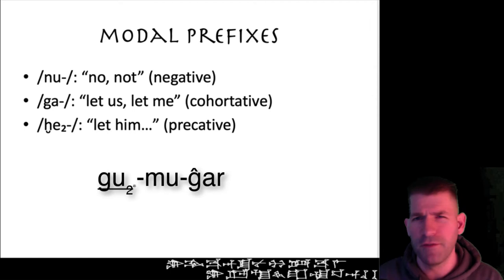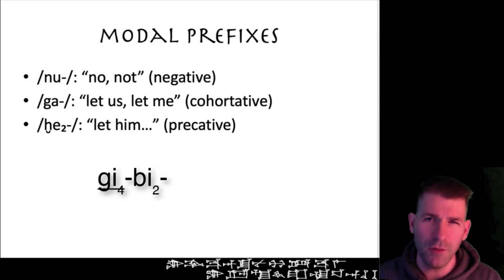Similarly, if it appears before b₂, it may be written ga-ab₂. Another important aspect of the cohortative ga is the effect that it has on the rest of the verb. First, the singular will always use the hamtu form of the verb, because the subject of the sentence—'I'—is indicated by the ga. There is no need to write it again in the verb.